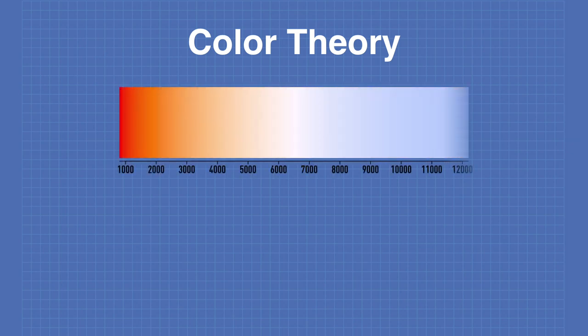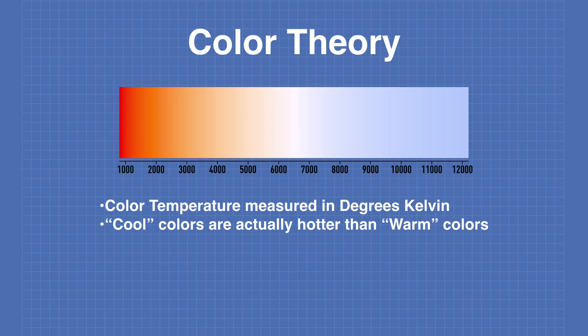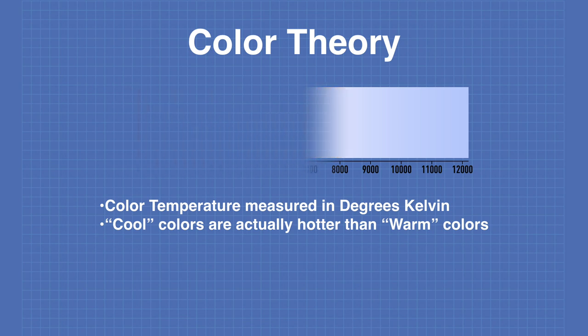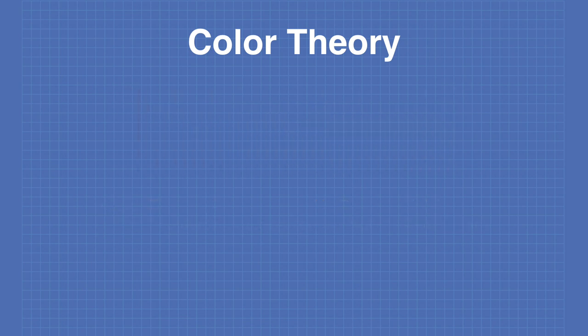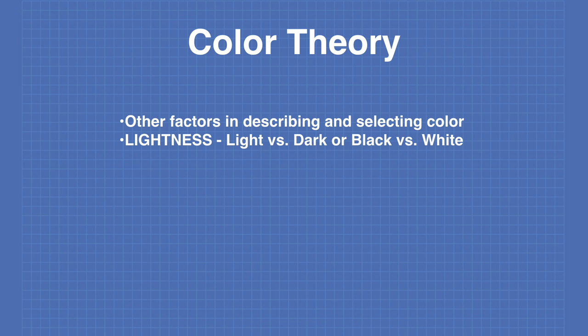Another aspect of color theory is color temperature, which is measured in degrees Kelvin. It can be a bit of a misnomer, as colors that are considered to be cool colors are actually hotter than those considered to be warm colors. There are other factors used in describing and selecting color: lightness, which is the light versus dark or black versus white aspect, and saturation, which is the intense versus the dull colors.